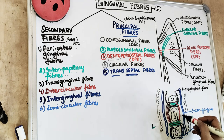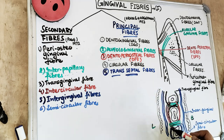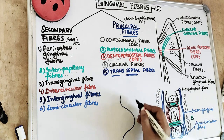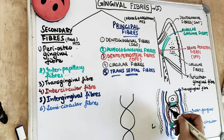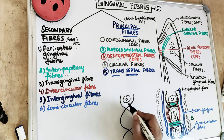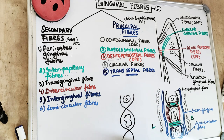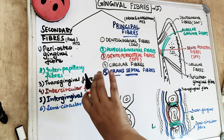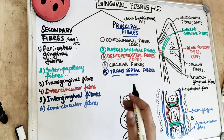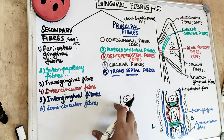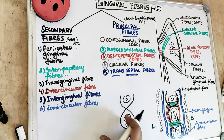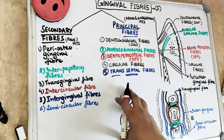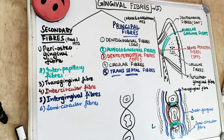The third secondary fiber is the transgingival fiber. These fibers make an S-shape or a figure-eight shape. They are arranged between and around the teeth within the attached gingiva, and these fibers maintain the alignment of the teeth in the arch by keeping them in position.